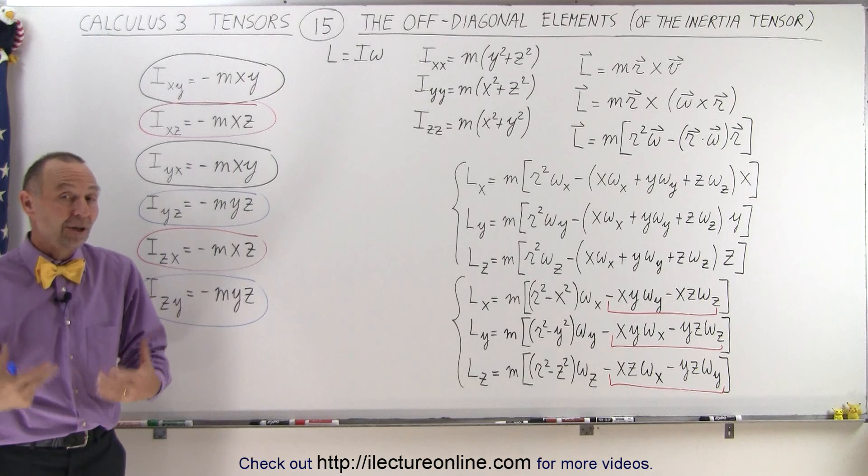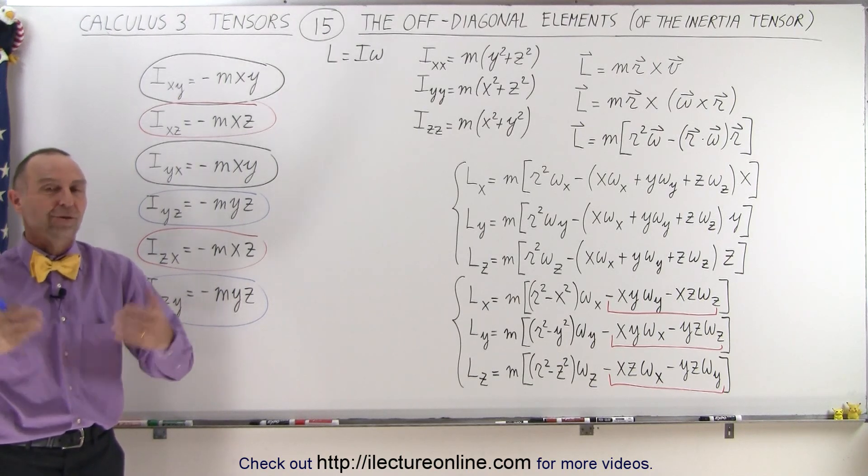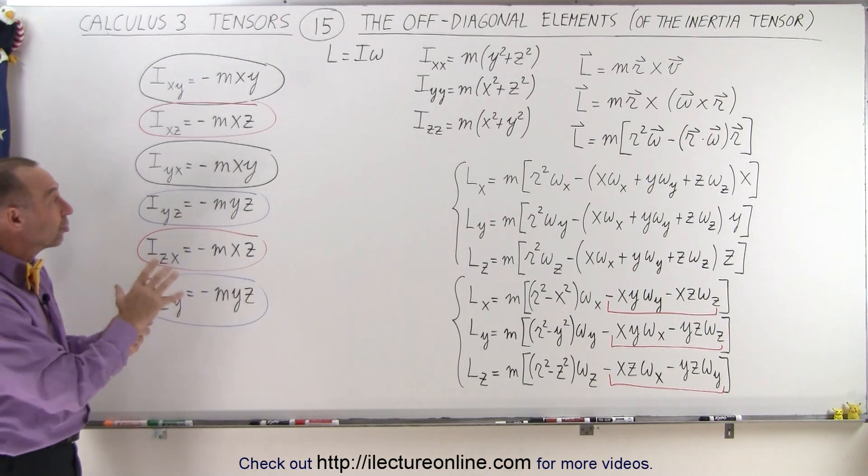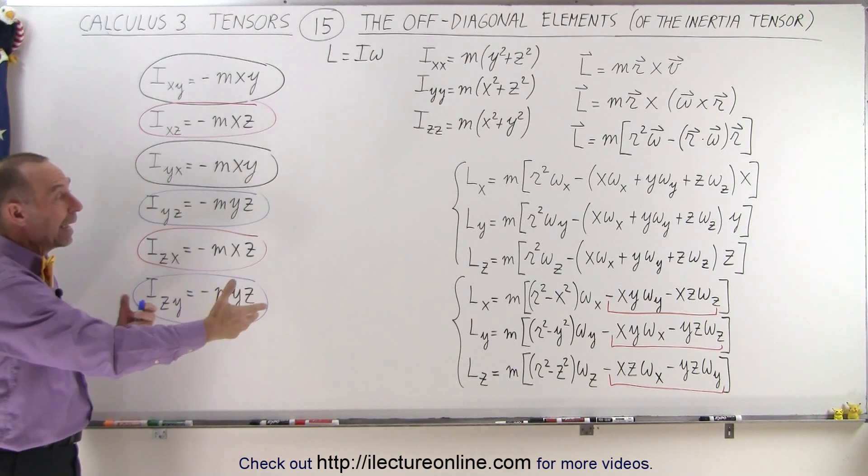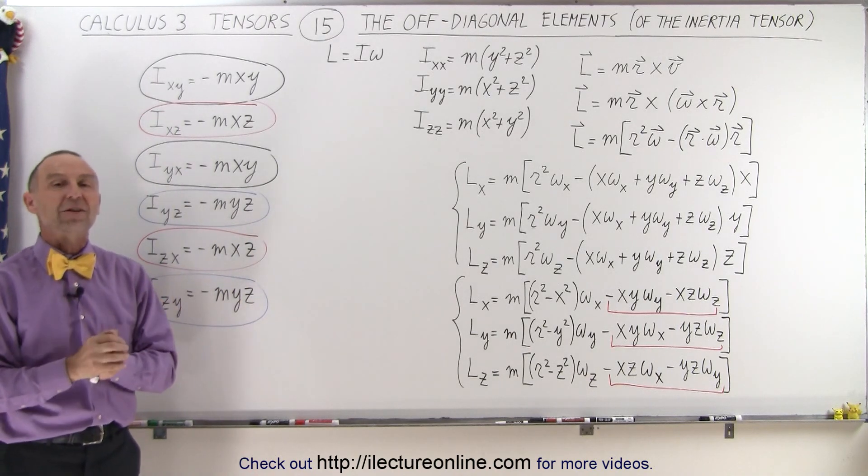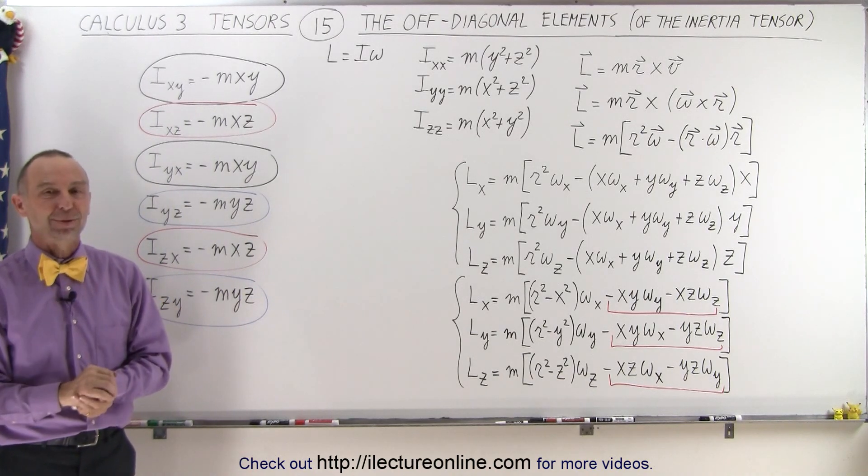And now we're going to show you some examples of how to use the inertia tensor so you'll get a real good feel for what it means. And we're going to understand what the diagonal terms mean and what the off-diagonal terms mean by using some clever examples to show you what that actually signifies. And that's how we do that.